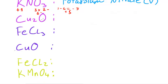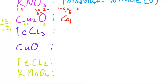The next one is Cu₂O — copper oxide with two copper atoms. Oxygen in this compound has an oxidation number of minus two, and since there's only one oxygen it's just minus two. The two coppers must balance this out, so their combined oxidation numbers equal plus two. Dividing by two gives each copper atom an oxidation state of plus one, so this is copper(I) oxide.